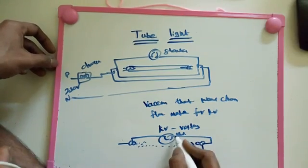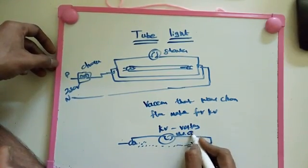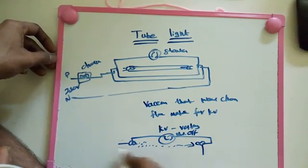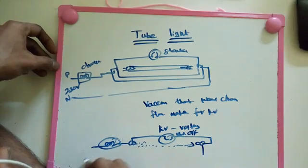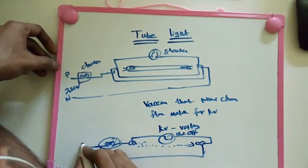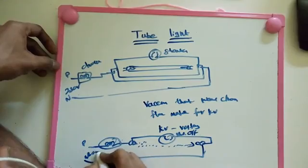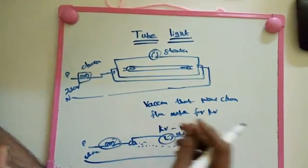That means the starter is going to off position, then the tube light is always working. Phase and neutral. This is one. If you want, we can see the real electrical.